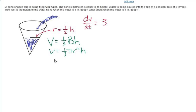And since we know that the radius is half the height, we can put it in terms of h. And when we simplify that, we get V = (1/12)πh³.